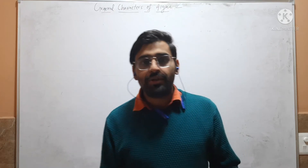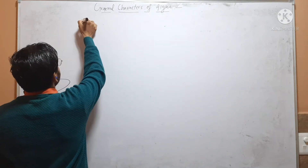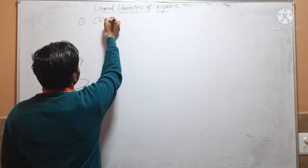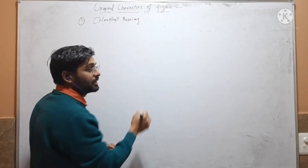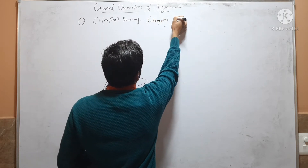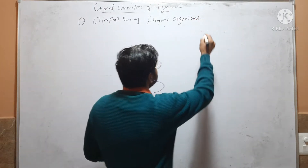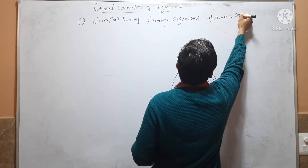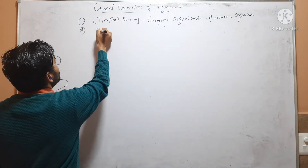In this video we will discuss the general characters of algae. First, algae are chlorophyll-bearing eukaryotic organisms, which means they are autotrophic organisms.